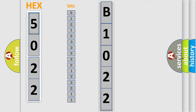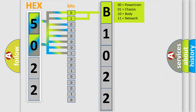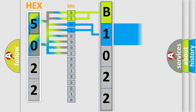The error code is split into two bytes consisting of 16 bits. One bit is the basic unit that each computer works with. The bit has two logical states: zero, which is a low level, and one, which is a high level. By combining the first two bits, the basic character of the error code is expressed.